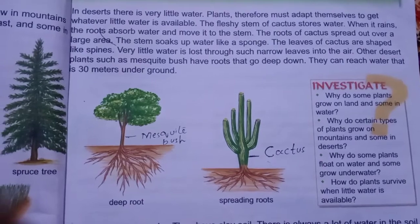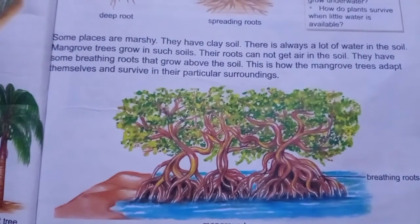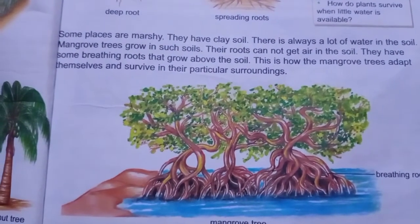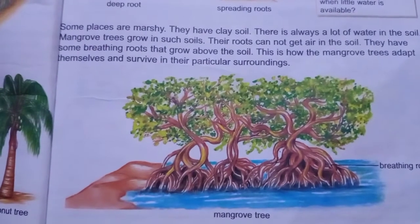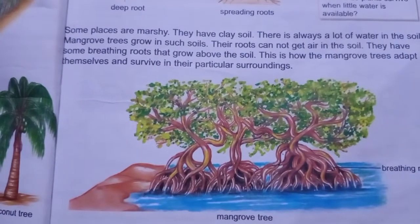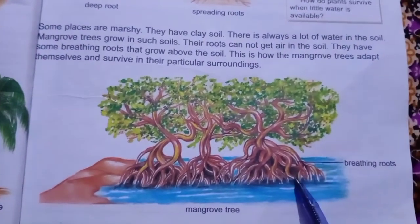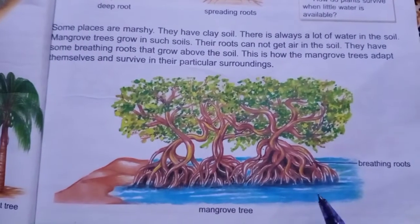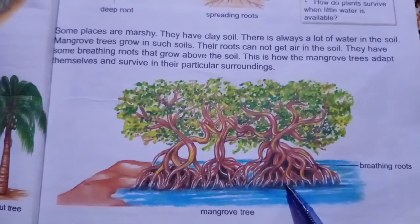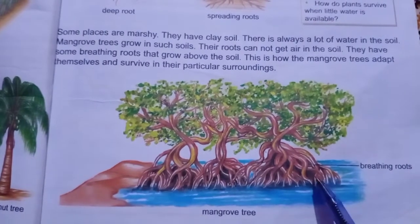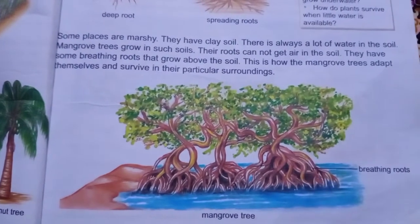کچھ places marshy یعنی muddy ہوتی ہیں جہاں چکنی مٹی پائی جاتی ہے اور زمین ہر وقت گیلی رہتی ہے۔ Mangrove trees وہاں پائے جاتے ہیں۔ ان کی roots زمین کی surface سے تھوڑا اوپر ہوتی ہیں — انہیں breathing roots کہا جاتا ہے۔ کیونکہ زمین بہت گیلی ہونے کی وجہ سے انہیں oxygen نہیں مل پاتی، اس لیے ان کی roots above the ground ہوتی ہیں جن کی مدد سے یہ breathe کرتے اور grow کرتے ہیں۔